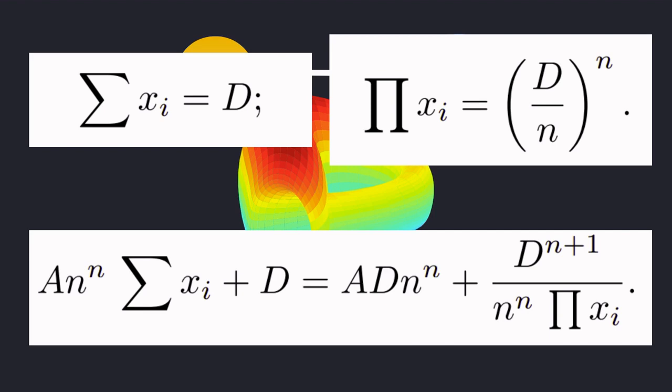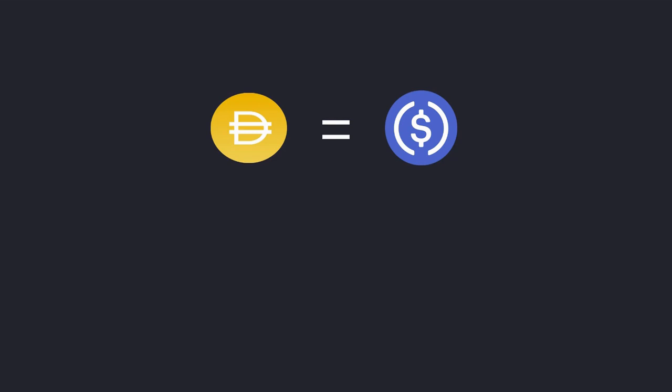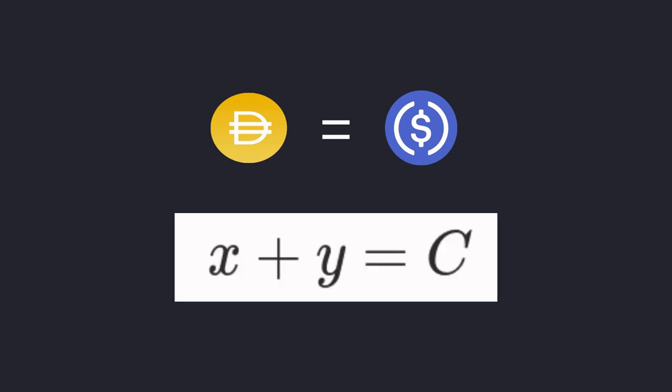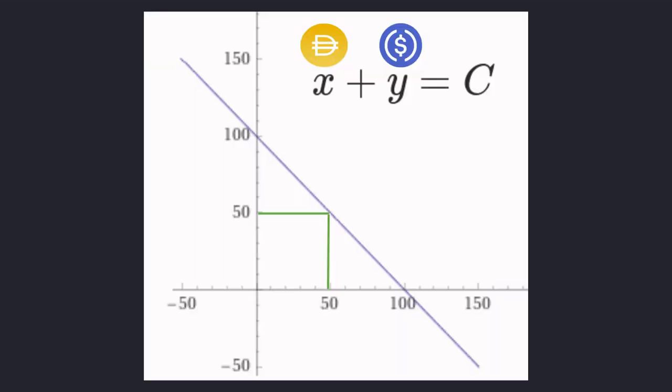We'll start with simple ideas and build our way up to this equation. Imagine we have an exchange where one DAI can be traded for 1 USDC. This can be expressed using x plus y equals c. This is the graph of x plus y equals c. Let's say we start out here with 50 DAI and 50 USDC. So in this case, x will equal 50, y will equal 50, so our c will equal 100.